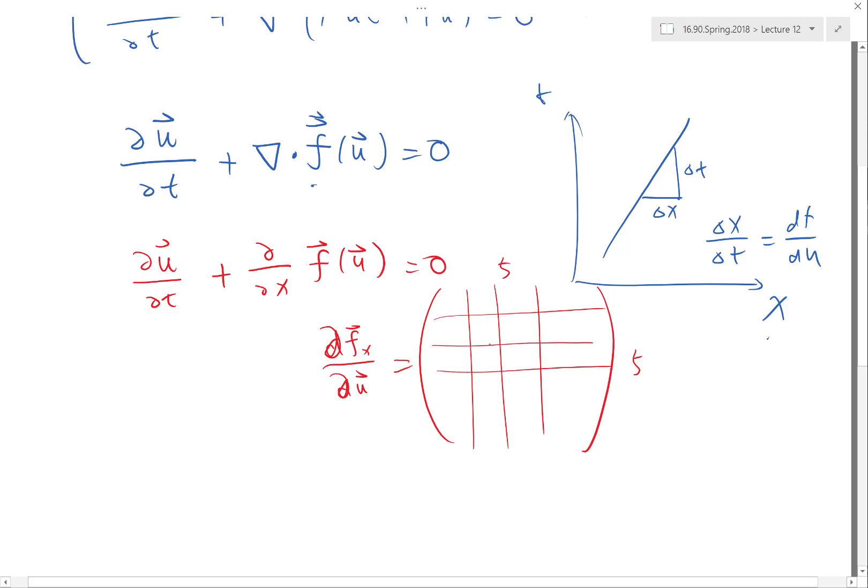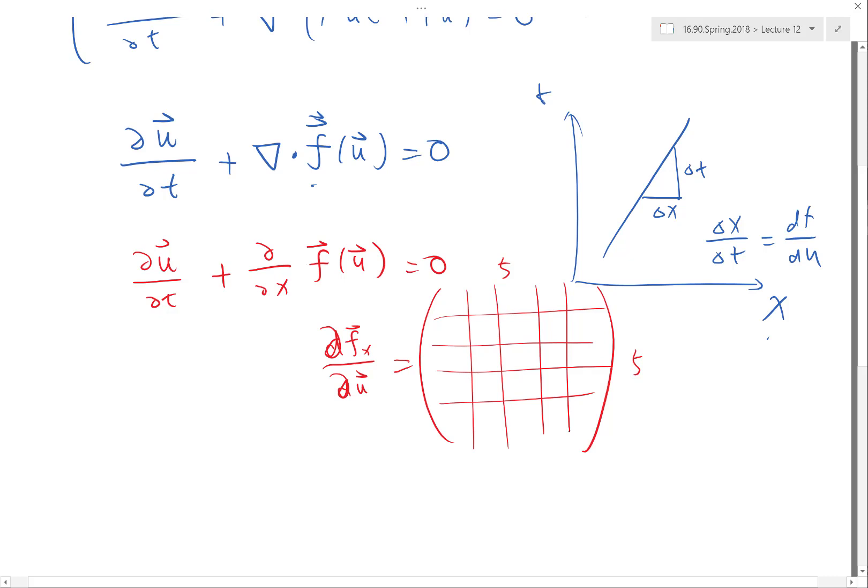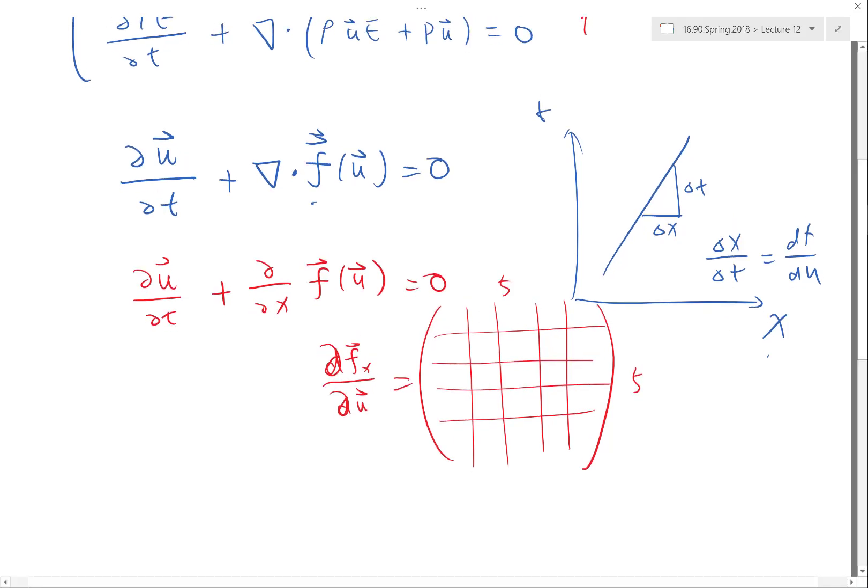So now we have a matrix. What determines the speed of the characteristics? What determines which direction the waves are moving? The determinant would only have one value - it's the eigenvalues of this matrix that determines which way the waves are moving, not just a single wave in this case.